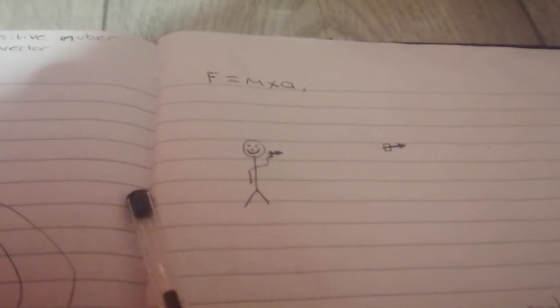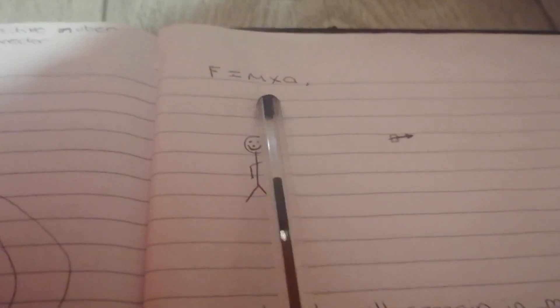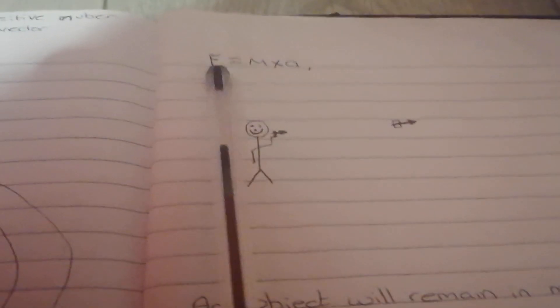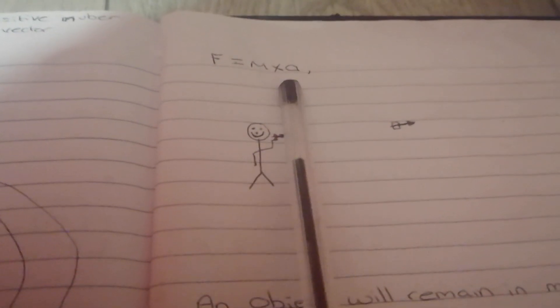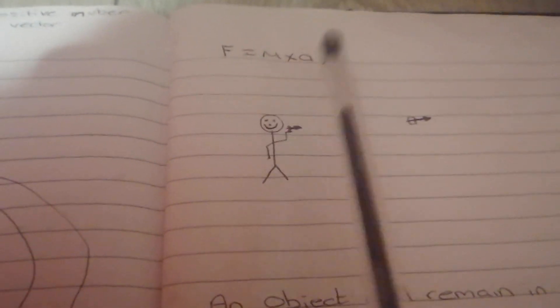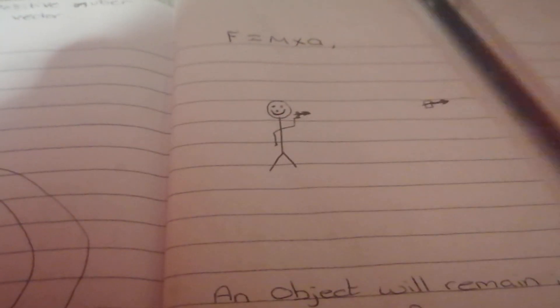Okay, so I think most people would agree, F equals M times A, mass times acceleration equals force. In order for there to be a force there must be mass times acceleration, and nothing moves without force, which again is mass times acceleration. I think most people would agree with that.